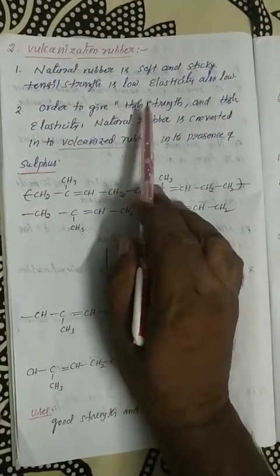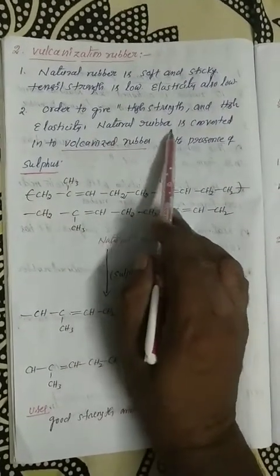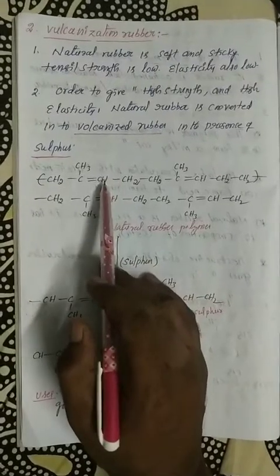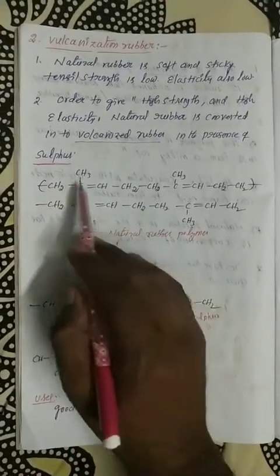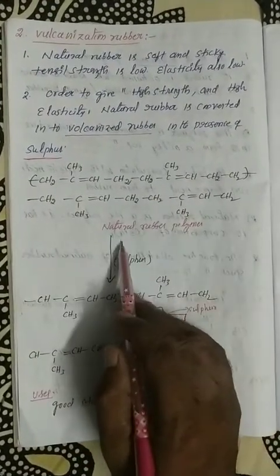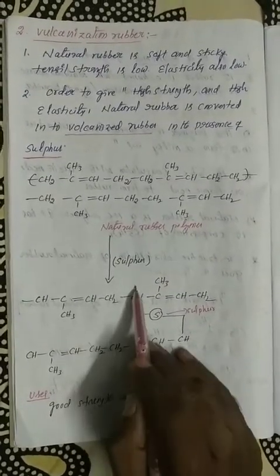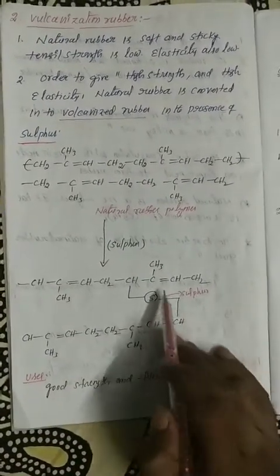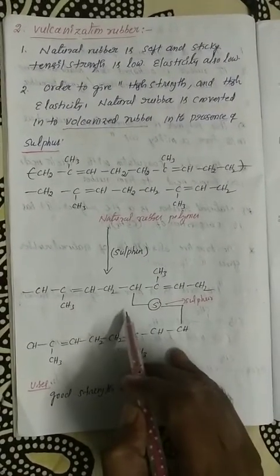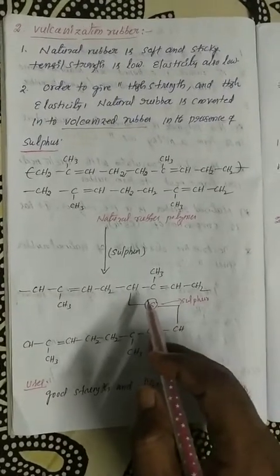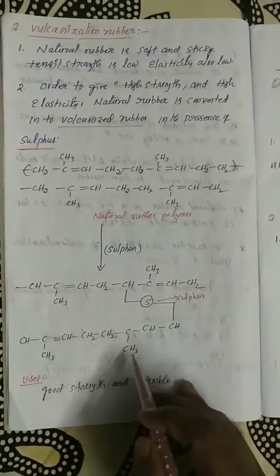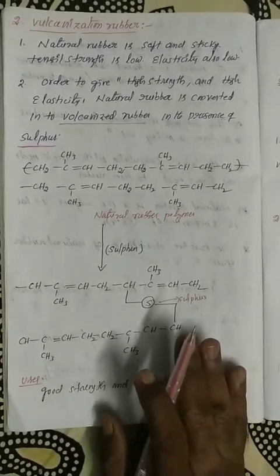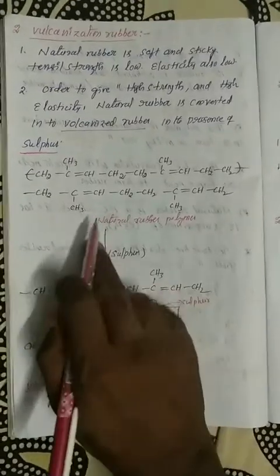To achieve high strength and high elasticity, natural rubber is converted into vulcanized rubber in the presence of sulfur. You take natural rubber and react it with sulfur. Sulfur bonds form between the two polymeric chains. When sulfur is added in between the polymeric chains of rubber, that rubber is commonly known as vulcanized rubber — it is hard, has more elasticity, more tensile strength, good strength, and is flexible. Vulcanized rubber is natural rubber with the addition of sulfur.